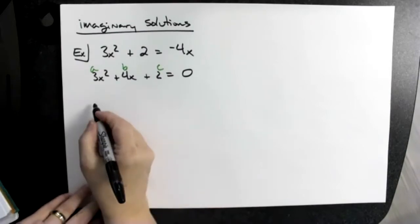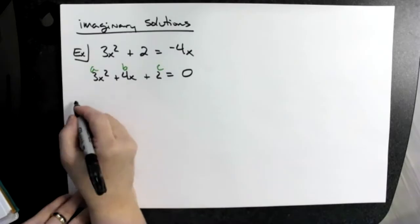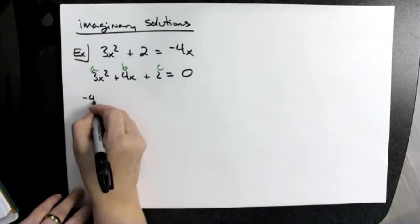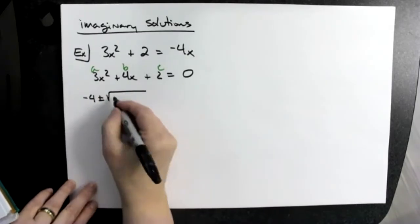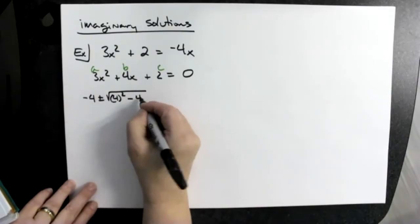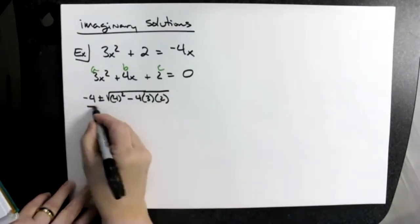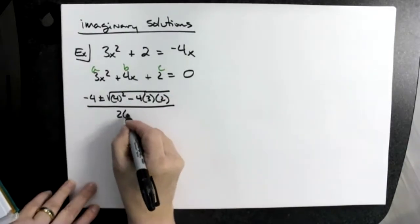We can plug this in, it's basic arithmetic. Hopefully by now we've got the formula memorized, so I'm not going to rewrite it. Let's do negative 4 plus or minus b squared, so 4 squared minus 4ac, all over 2 times our a value.